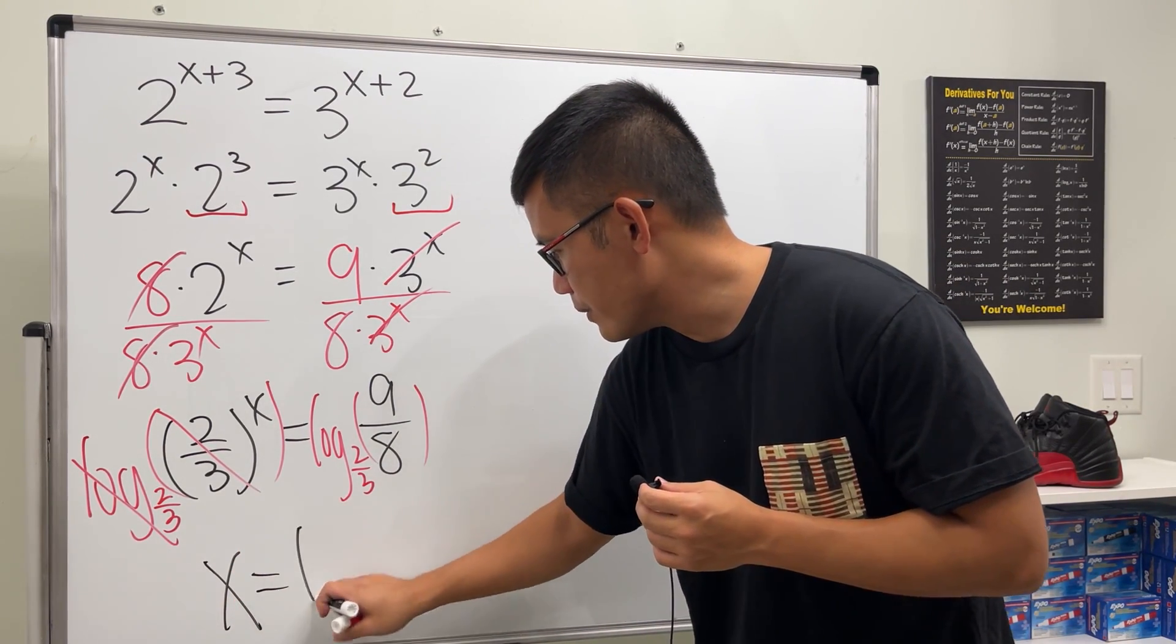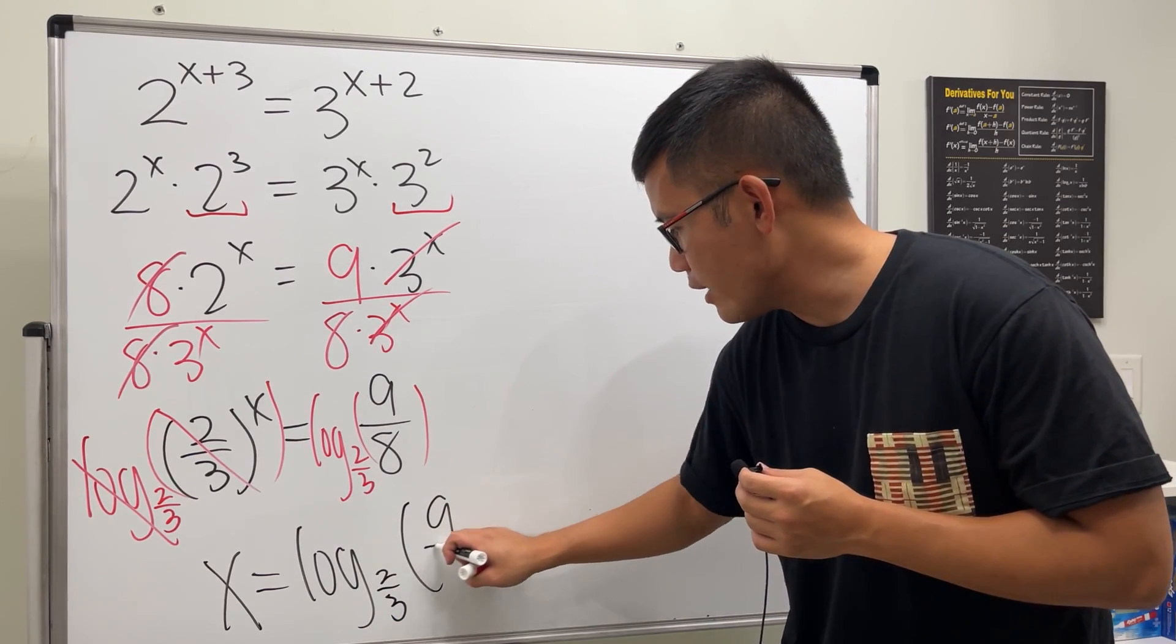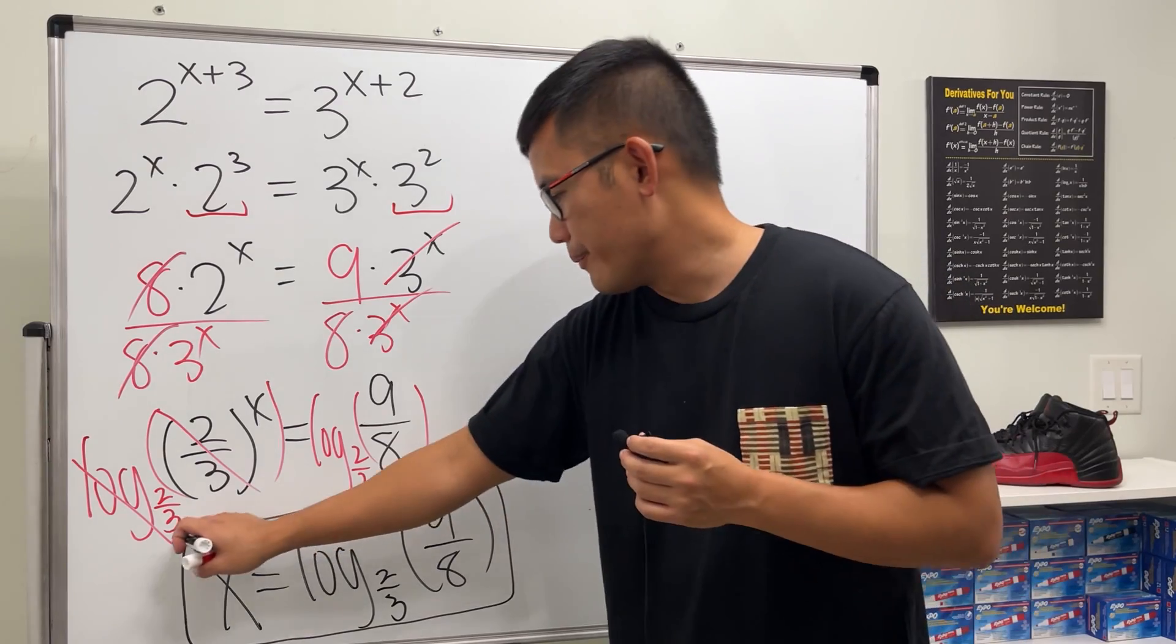So that this and that cancel and finally we see that x is just nicely equal to log base 2 over 3 of 9 over 8.